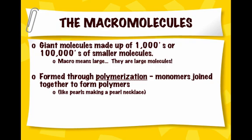Macromolecules in Greek means giant molecule, and macromolecules are made up of thousands or hundreds of thousands of smaller molecules. Formed through polymerization, these monomers — which are the single units — are bonded together to form very large polymers. You can think of it like pearls making a pearl necklace. Each individual pearl is a monomer, and when you link them together, the pearl necklace becomes the polymer.